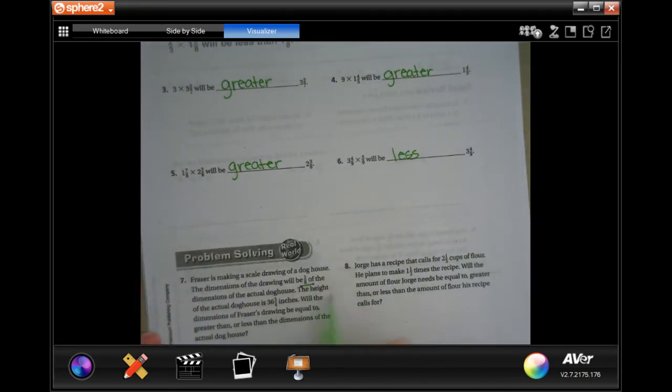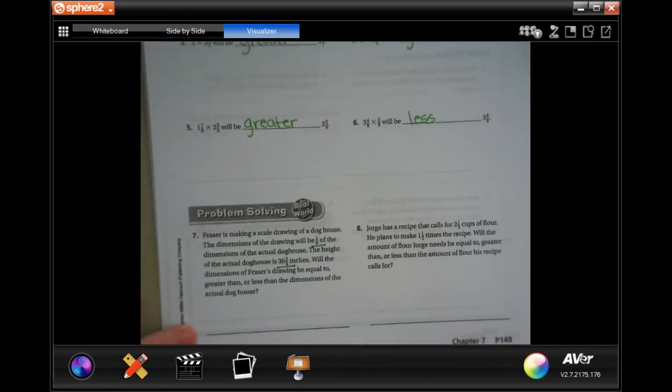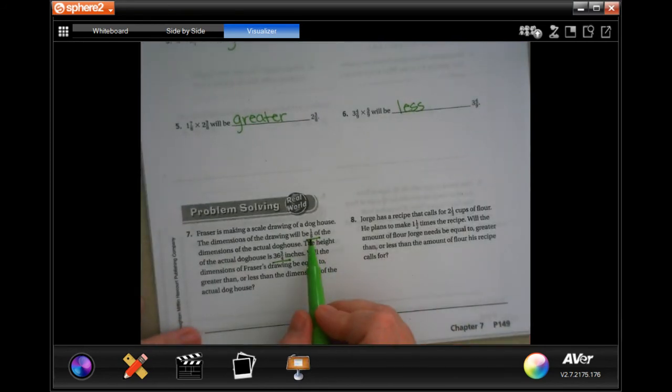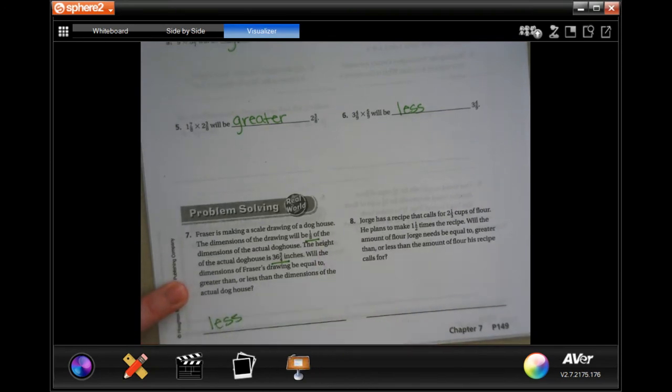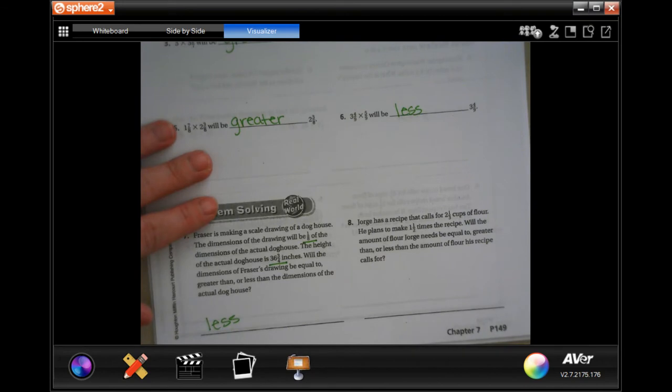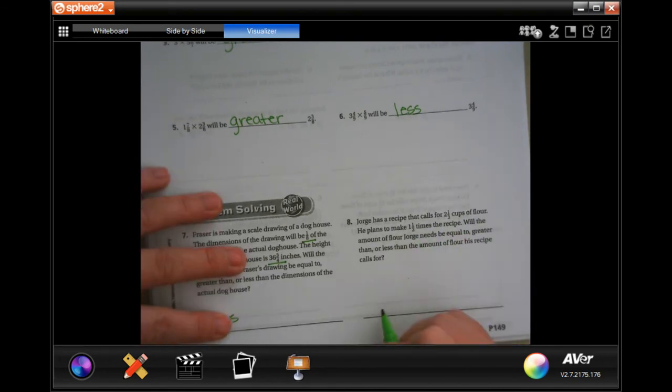This one, 1 eighth, and a whole number and a fraction. 1 eighth is less than 1, so it's going to be less. Whole number with a fraction, whole number with a fraction, greater.